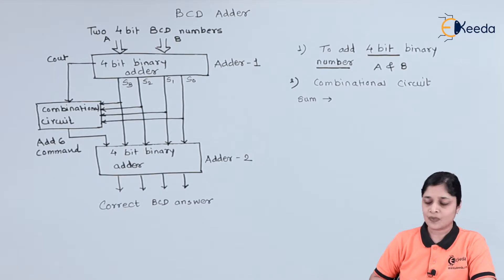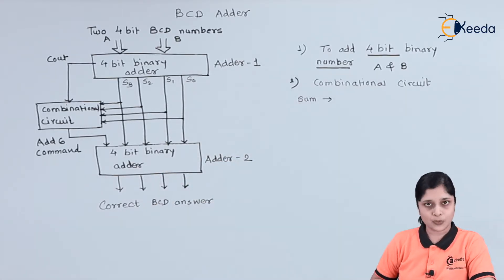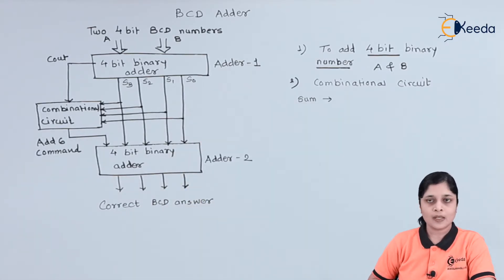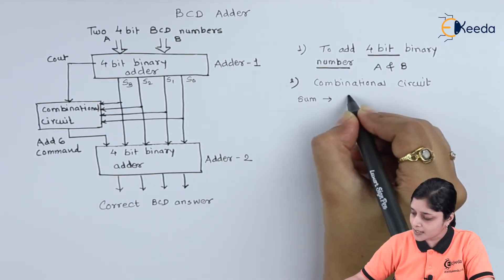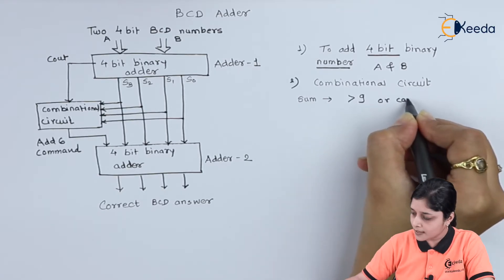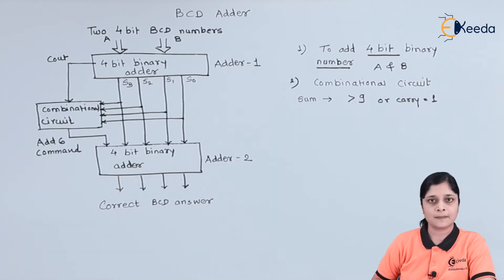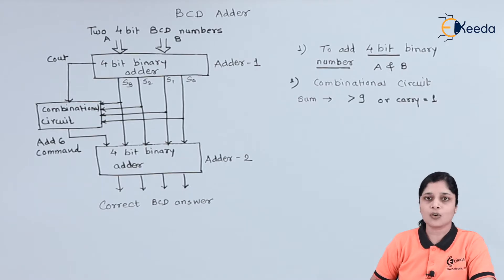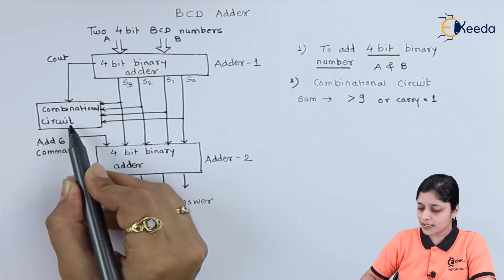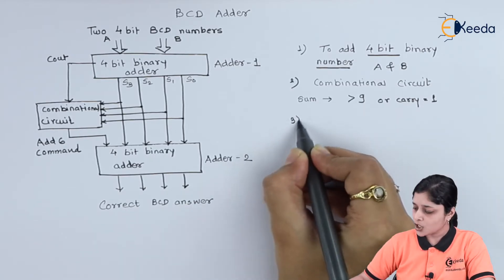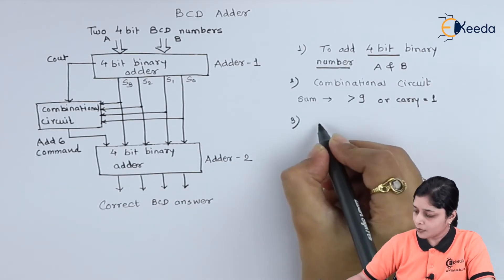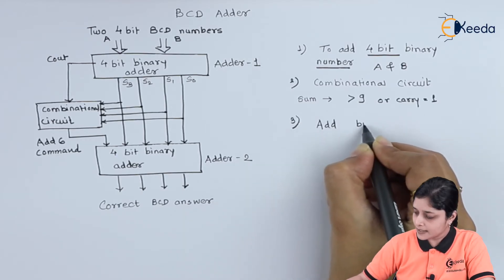Now if the sum of two binary numbers is greater than nine, then it will process towards Adder Two; otherwise it will give the answer at Adder One only. We have here a combinational circuit for the condition: if the sum is greater than nine or carry equals one. If this condition occurs in the addition of two four-bit binary numbers, then this combinational circuit and Adder Two will operate, and you have to add binary six.